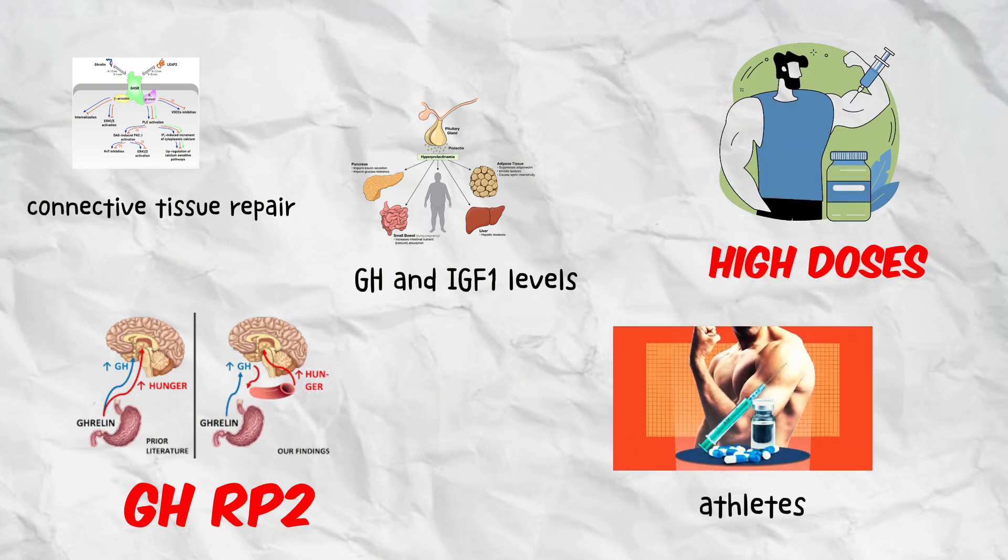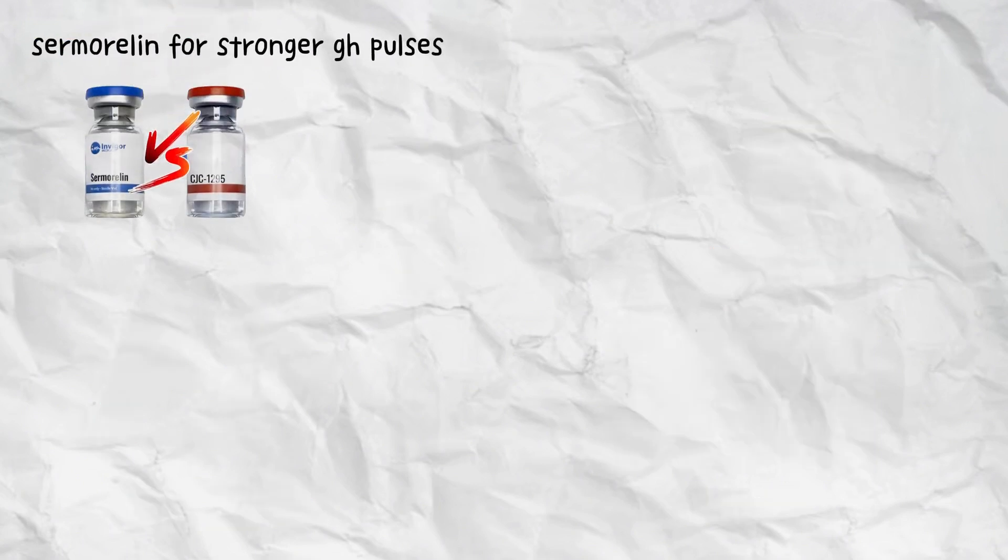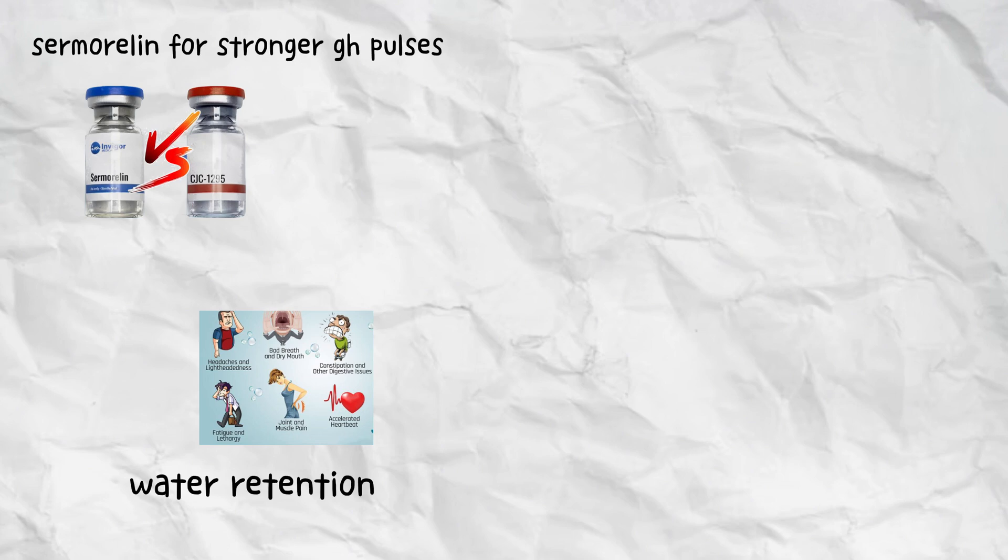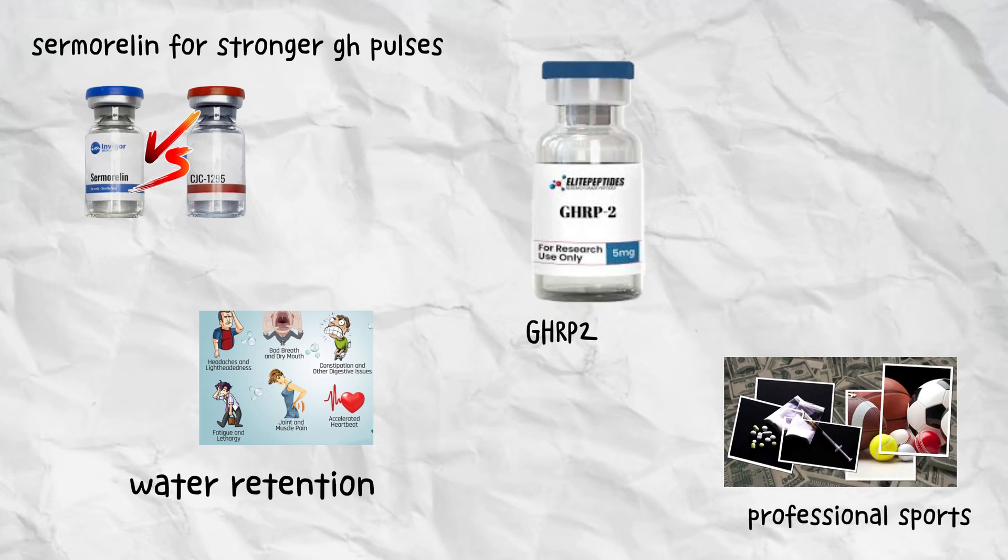Athletes use it for recovery and lean mass gain, often pairing it with CJC-1295 or sermorelin for stronger GH pulses. Reported side effects include mild flushing, water retention, or fatigue. Like most peptides in this category, GHRP-2 remains unapproved for human use and banned in professional sports.